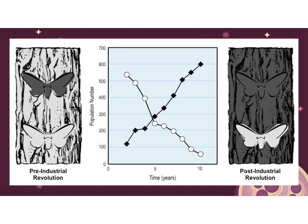One example of natural selection we've seen in real time is the peppered moth. They lived in Europe with birch trees that have white bark. There were two types: a peppery type that was more white, and a darker type. Initially, pre-Industrial Revolution, the white one was better suited to the environment because it could hide. So the white moth population or allele frequency was much higher.